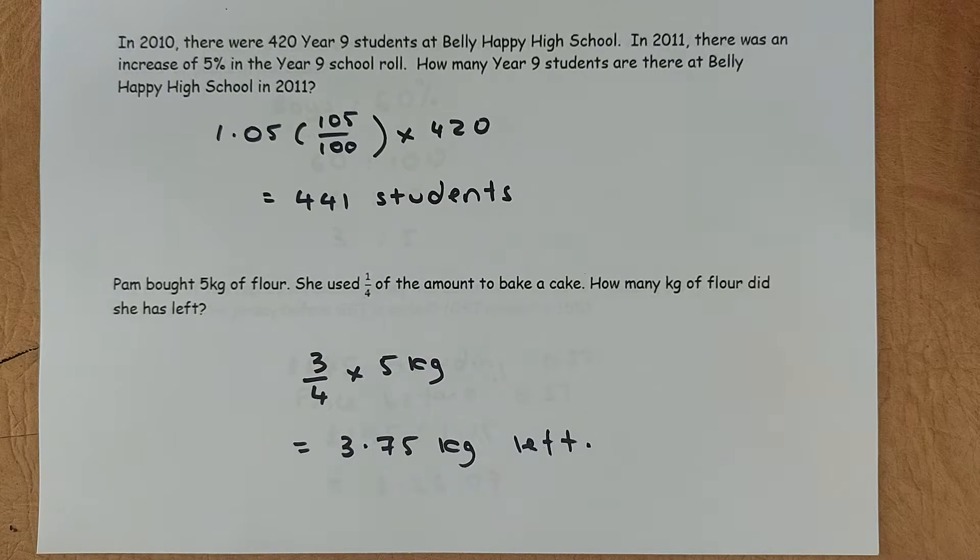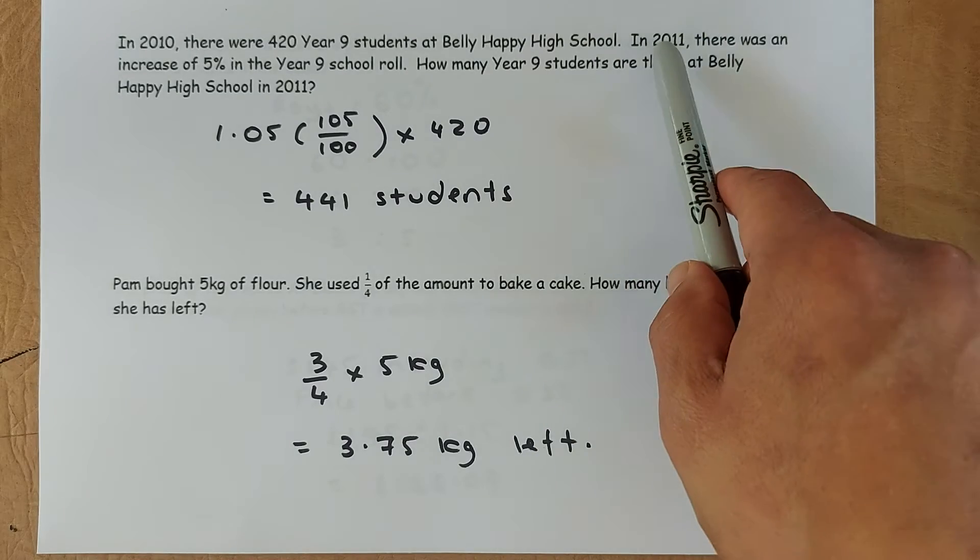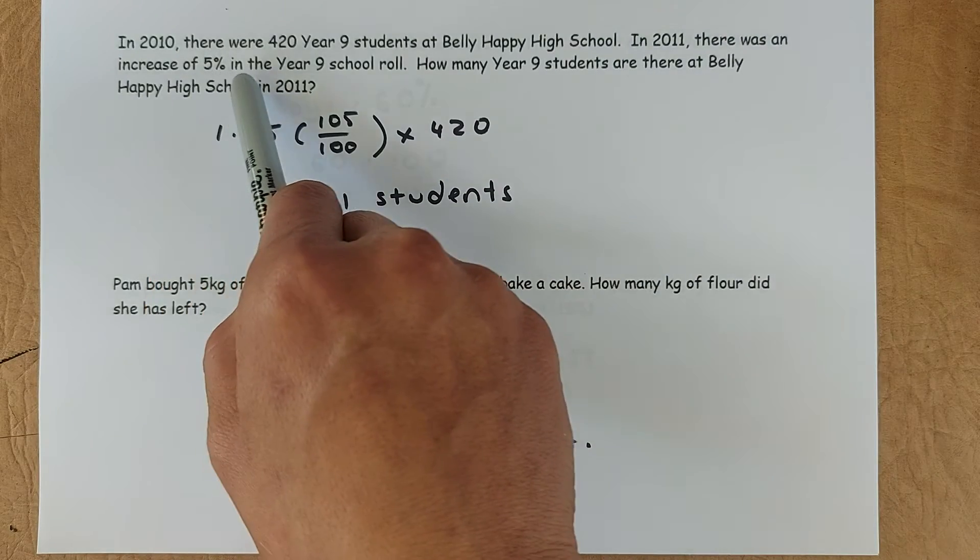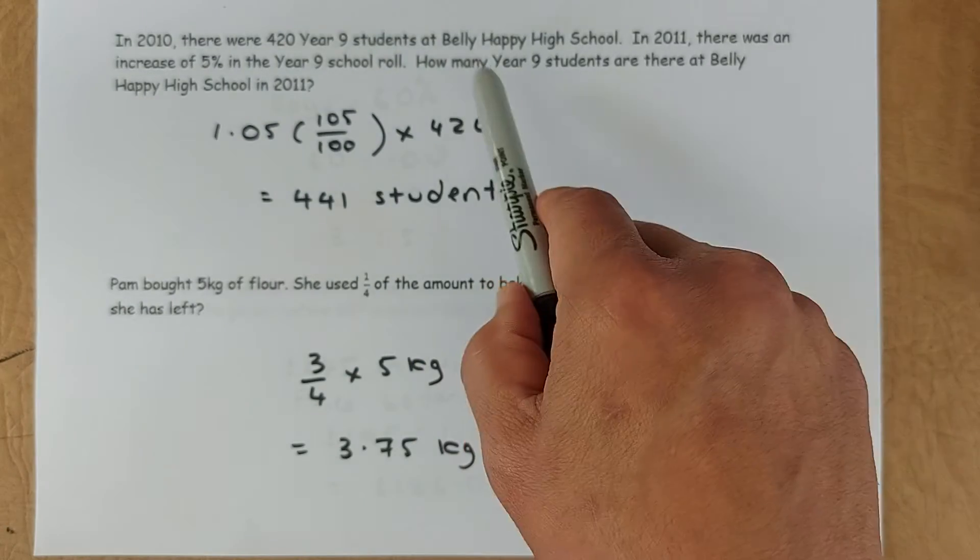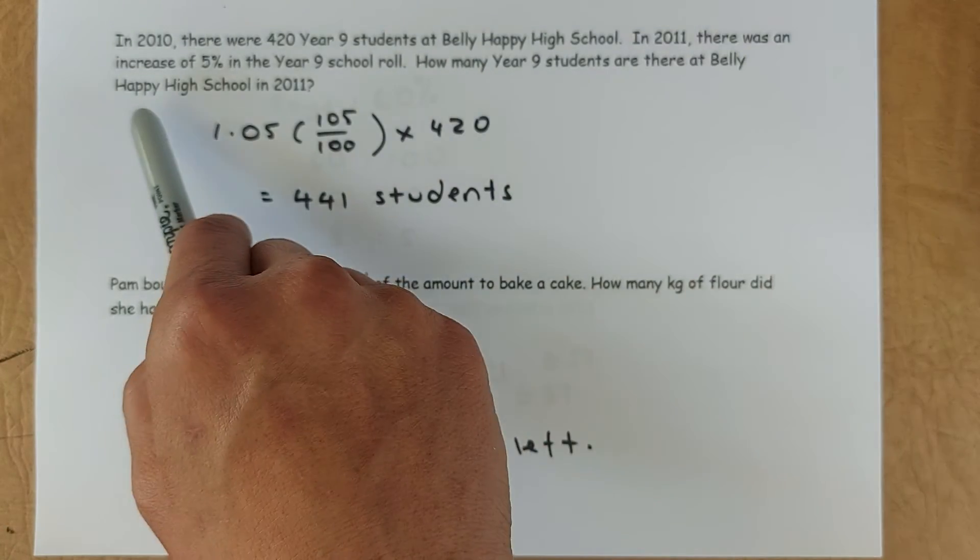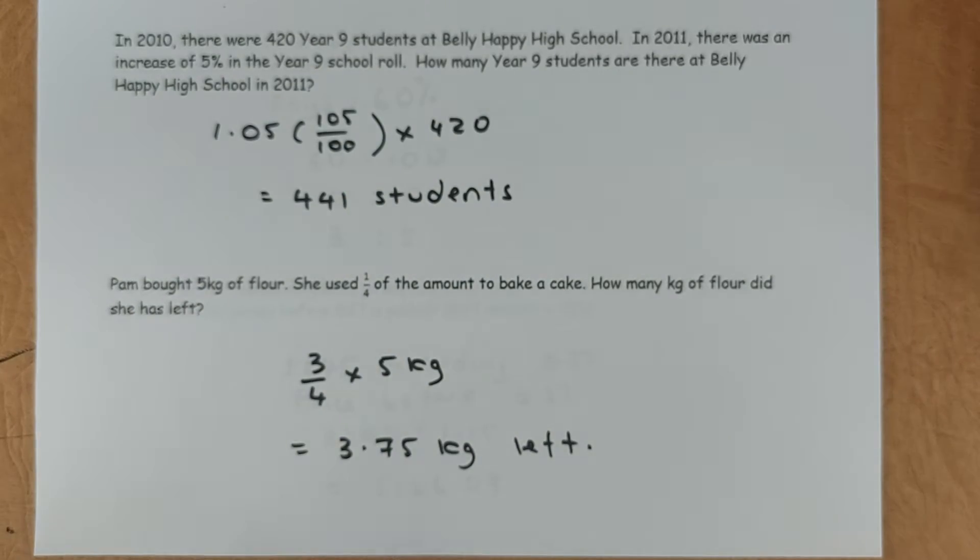So we look at the third word problem. In 2010, there were 420 year 9 students at Valley Happy High School. In the next year, 2011, there was an increase of 5% in the year 9 school roll. How many year 9 students are there in the school in 2011?